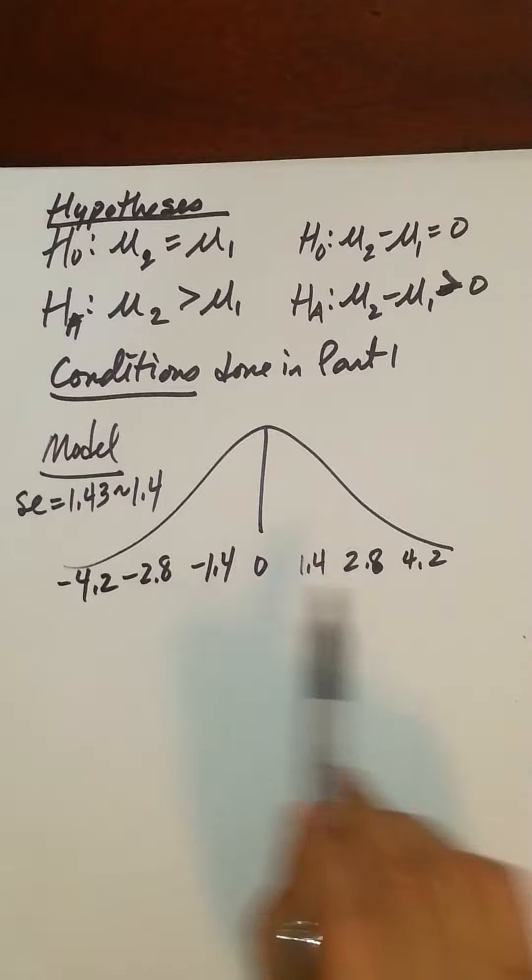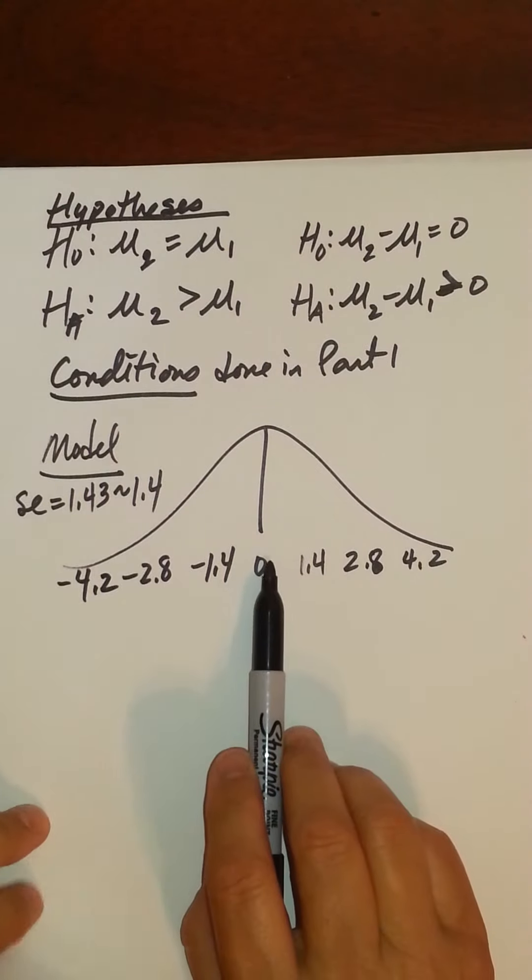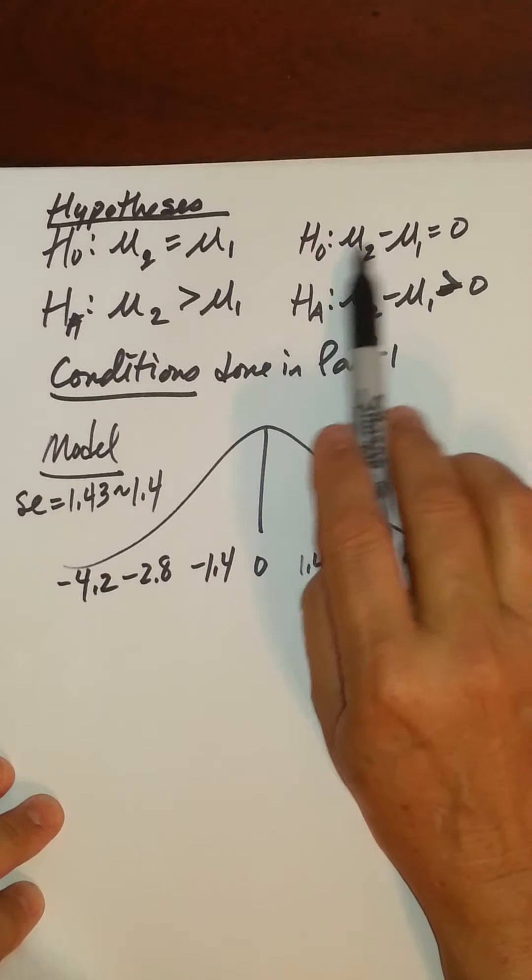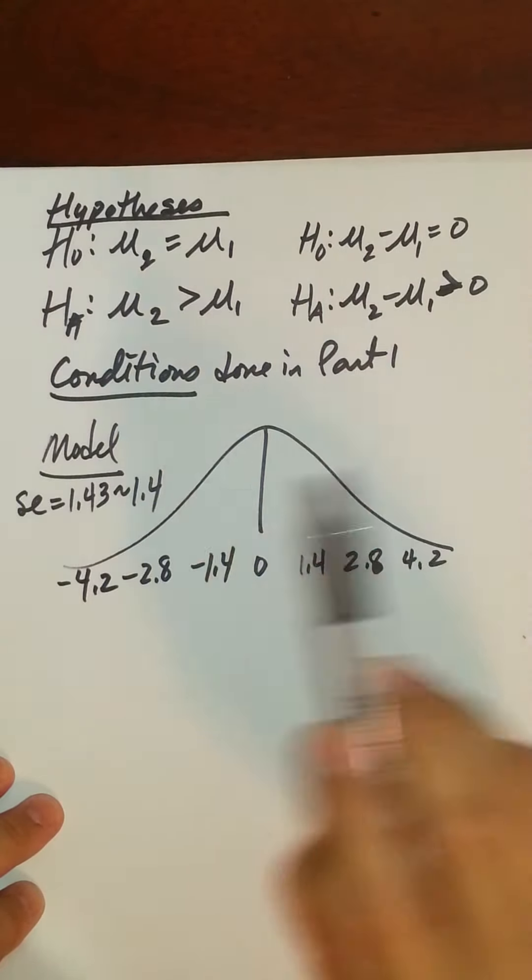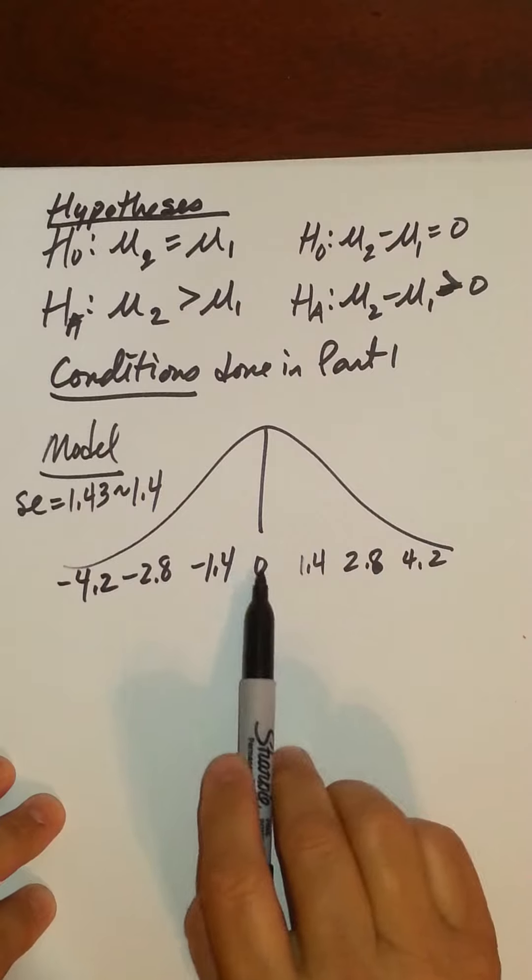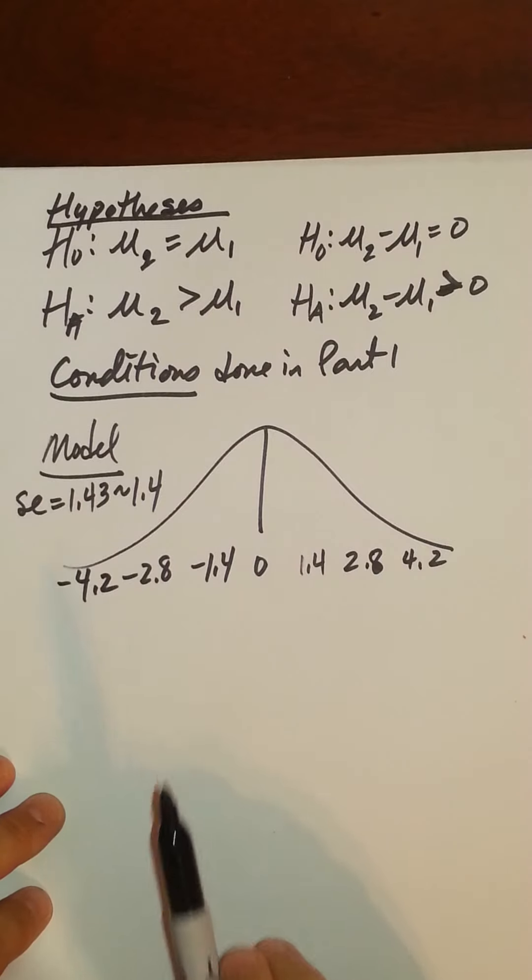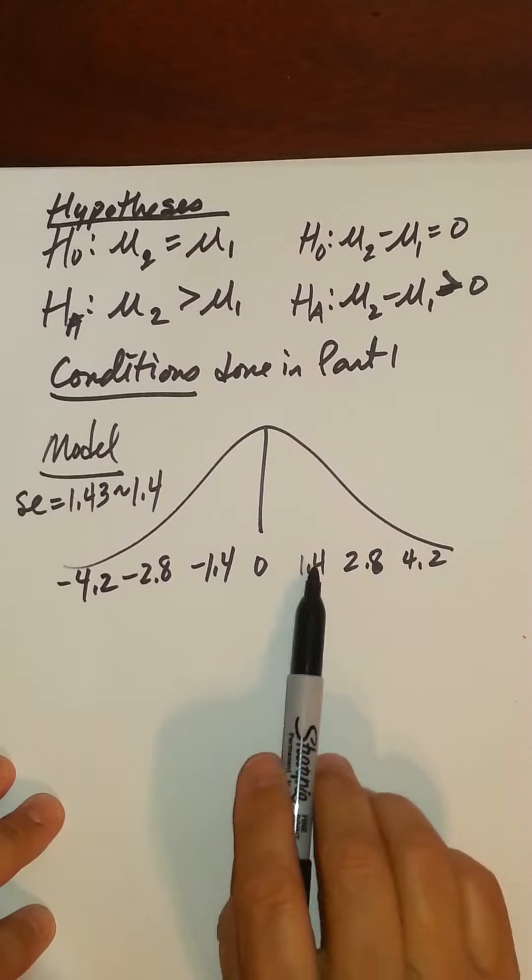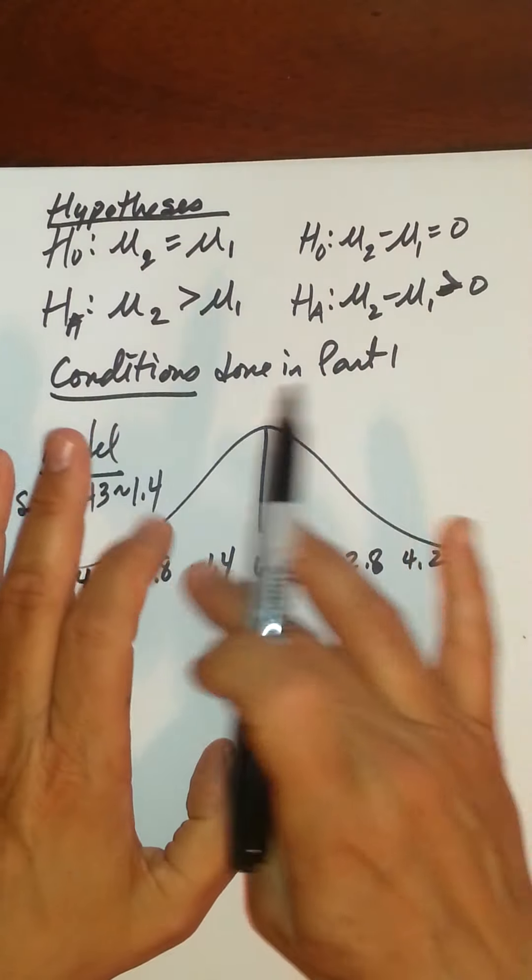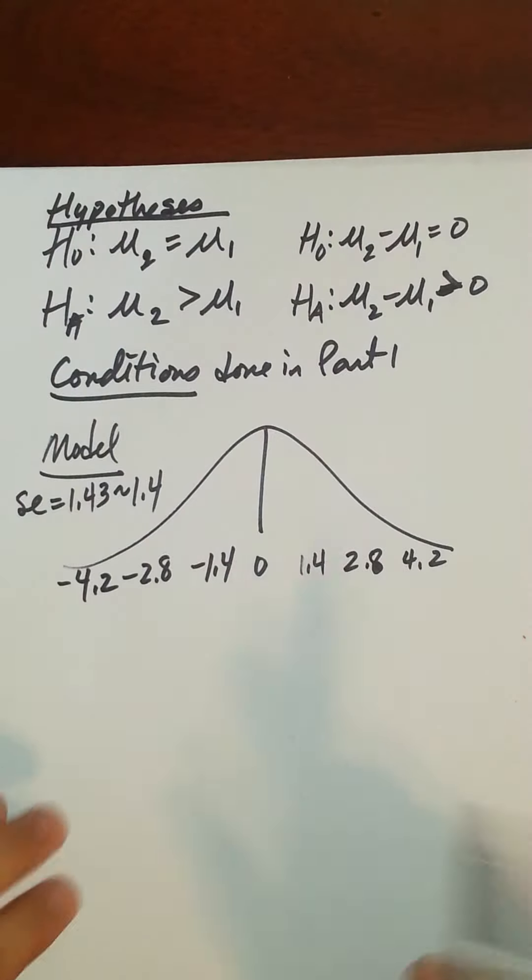And again, just to remind you what this distribution is really saying, is saying that if indeed it's true, that our null is true, that there's no difference on average, there's no average difference in the time that it takes to go route 1 or route 2. If that is true, then we'll still see sample differences of up to 1.4 minutes either way. How often? 68% of the time, because that's about one standard error in both directions.